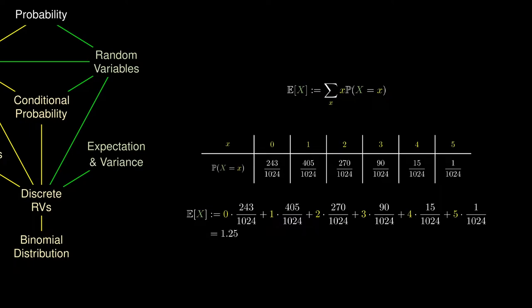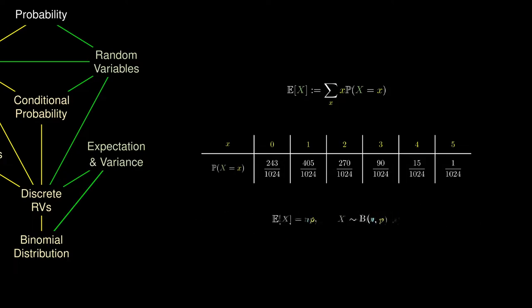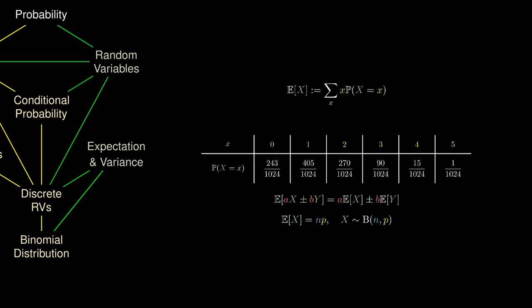And if we know that our random variable follows a binomial distribution, we know that the expected value must be the number of trials multiplied by the probability of success. One of the most important properties of expectation is the fact that it is linear. In other words, you can pull out constants and plus and minus signs without any issues.